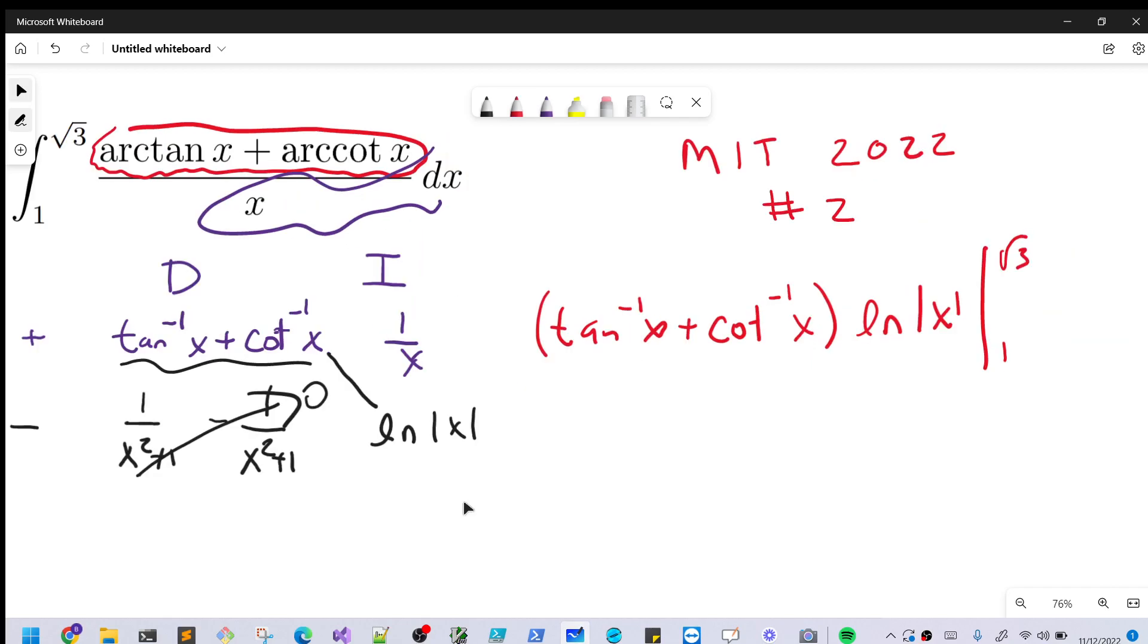And then what we can notice now is that when we plug in our one into ln x, this term is just going to be zero. So really all we need to do is evaluate the square root of three.